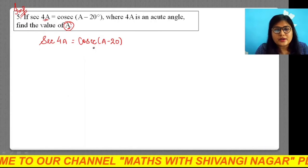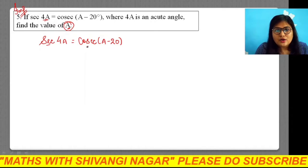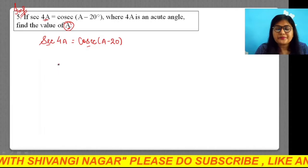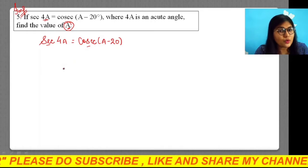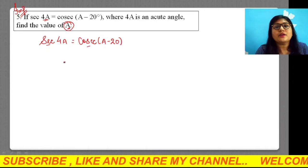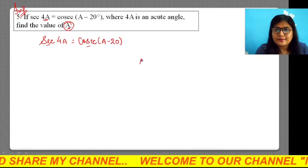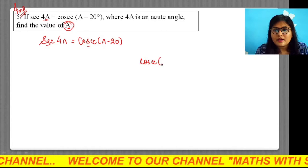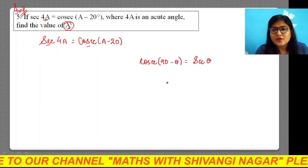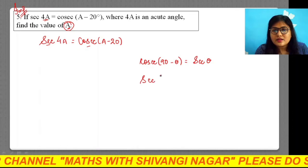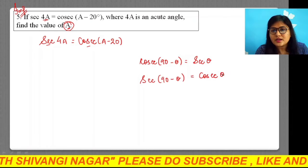To proceed further, is there any relationship between sec and cosec? Yes, we have studied in the trigonometric ratios of complementary angles that these ratios are complementary to each other. That means cosec (90° - θ) equals sec θ, or sec (90° - θ) can be written as cosec θ.